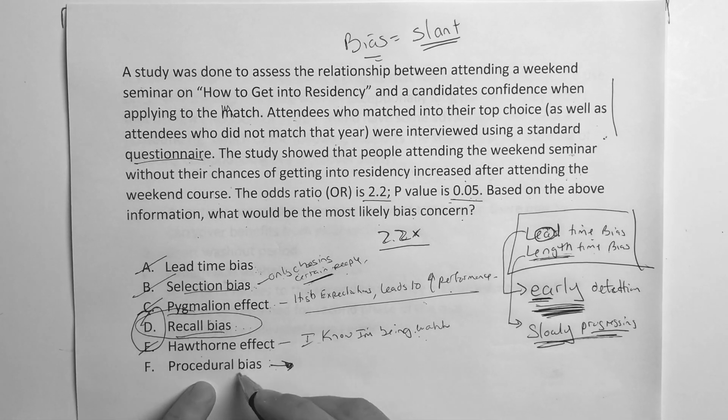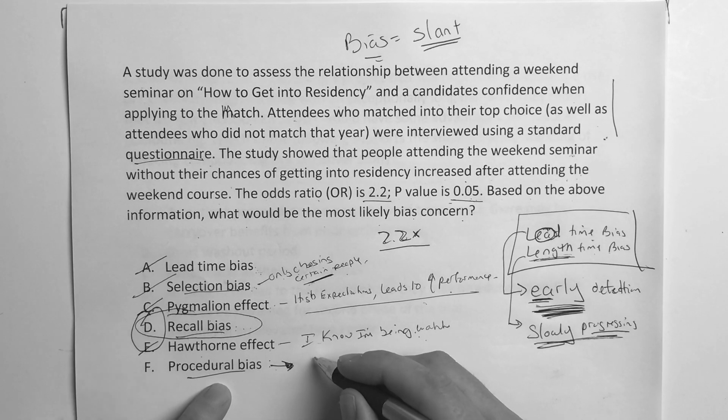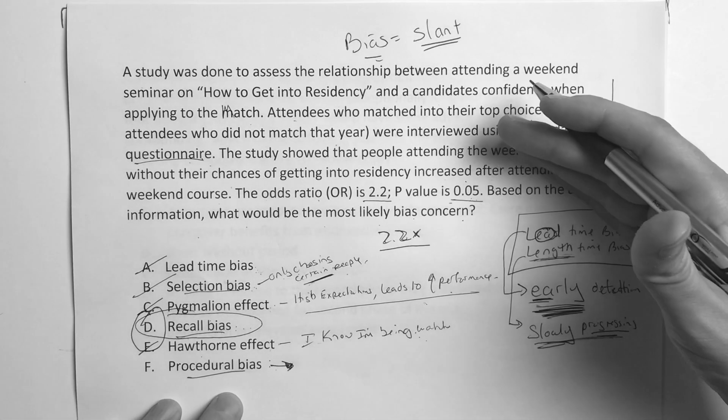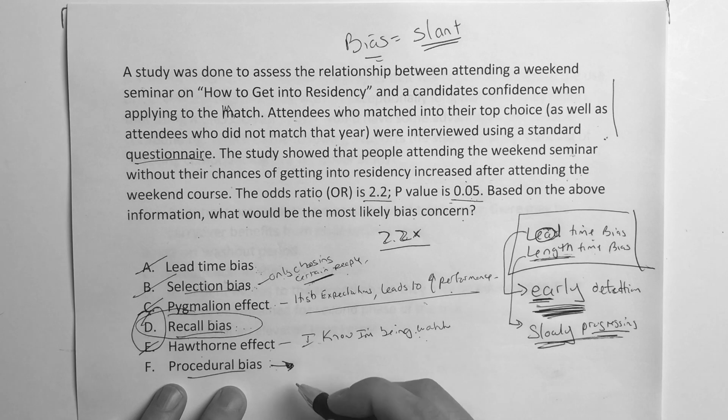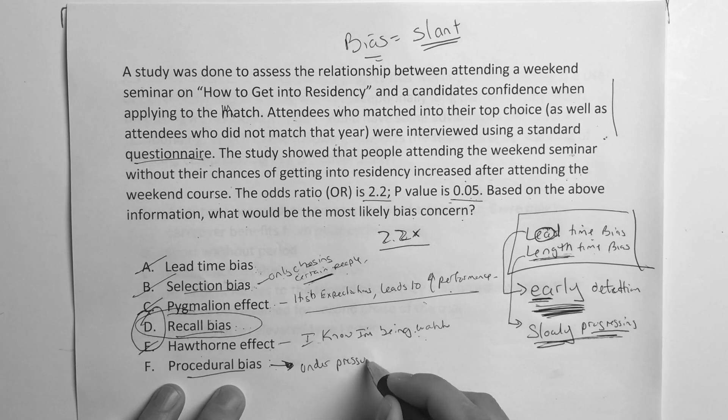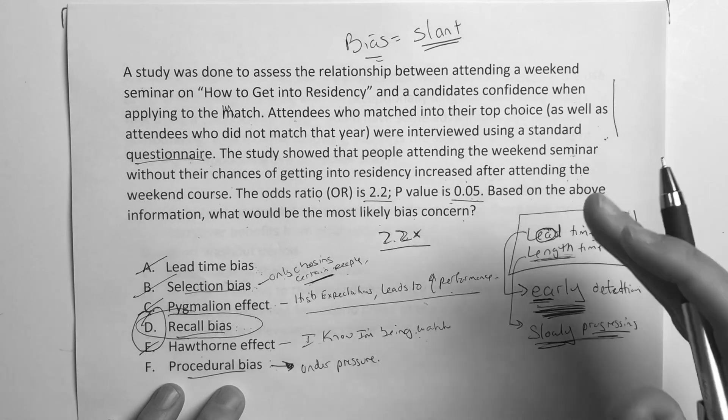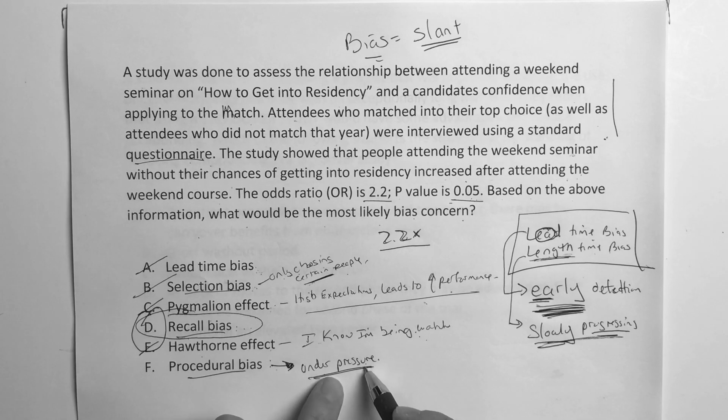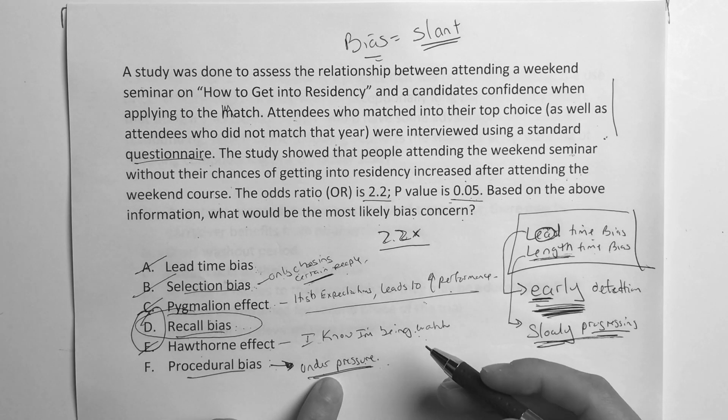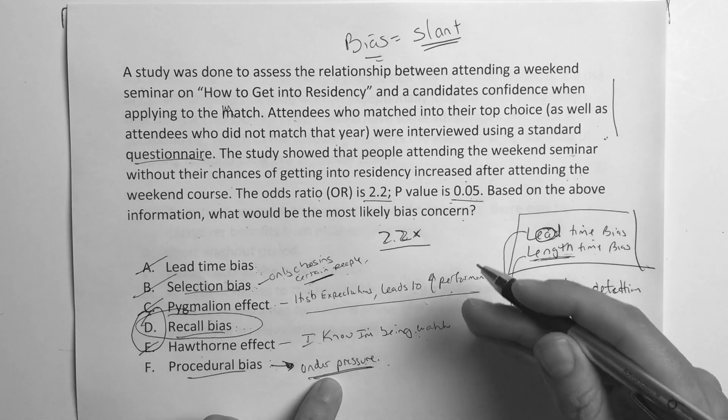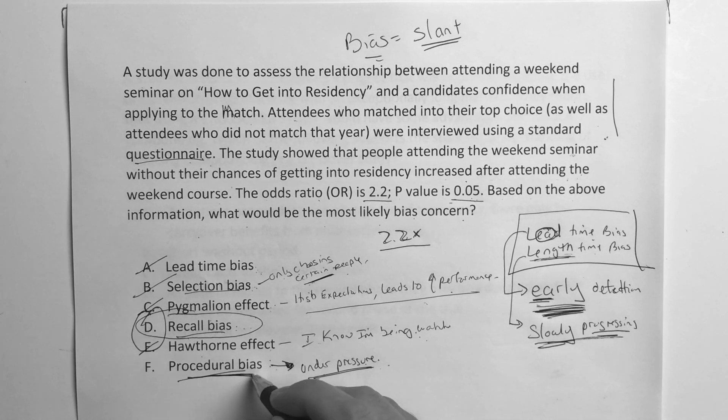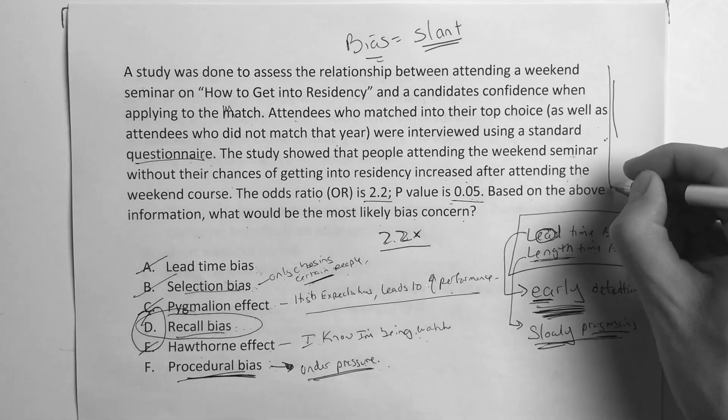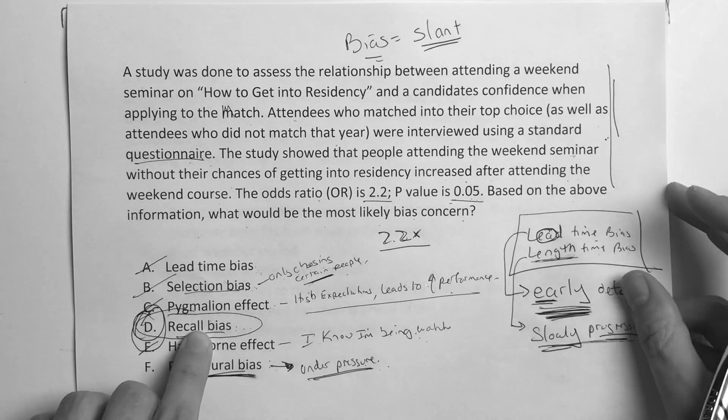So in this situation, it's the recall bias. Anytime that you do a questionnaire that's done after the fact, there's a chance that you could have a recall bias in that situation. And procedural bias, think of like this, at the end of a rotation, you're supposed to fill out the attending evaluation. But the fact is, you're under pressure because you're thinking, what if this attending reads this? So anytime that you're under pressure and you've got to fill out an evaluation or give some type of feedback that's influencing how you'd fill it out, that's called a procedural bias.